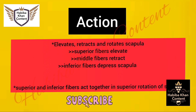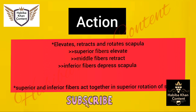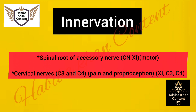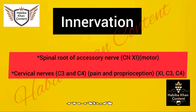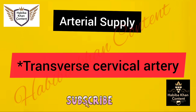Inferior fibers depress scapula. Superior and inferior fibers act together in superior rotation of scapula. Innervation: spinal root of accessory nerve CN11 (motor), cervical nerves C3 and C4 (pain and proprioception). Arterial supply: transverse cervical artery.